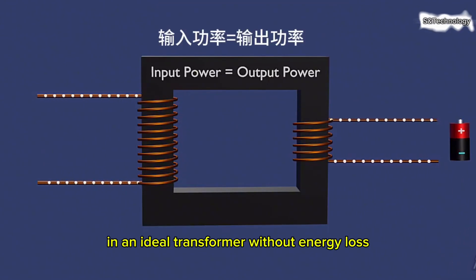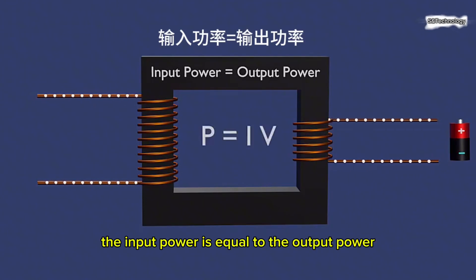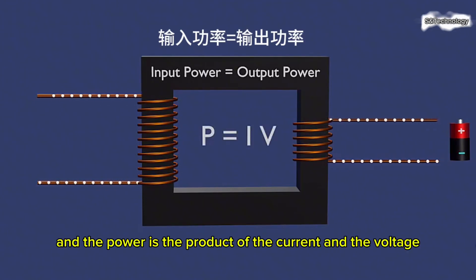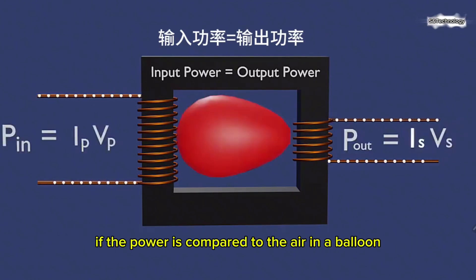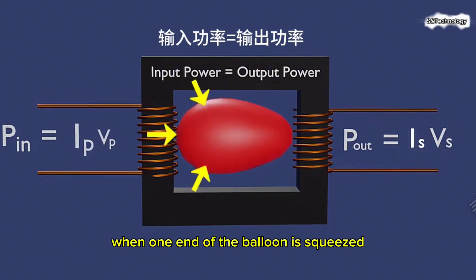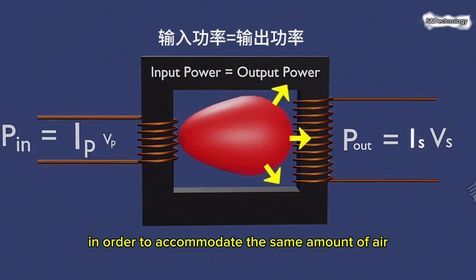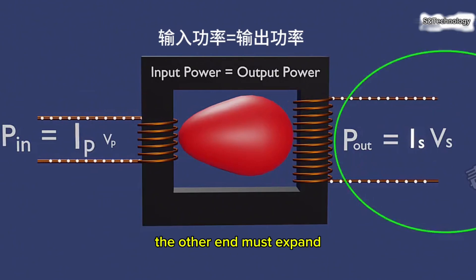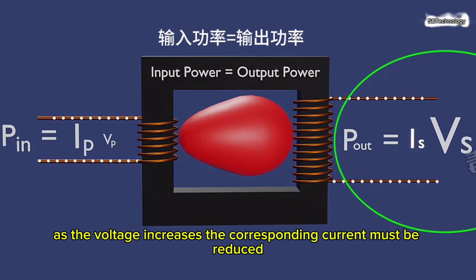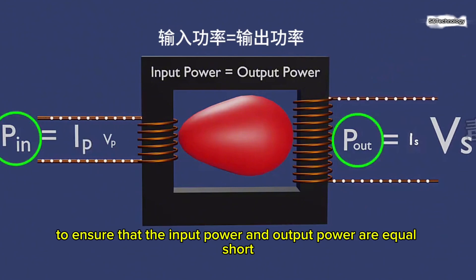In an ideal transformer without energy loss, the input power is equal to the output power, and the power is the product of the current and the voltage. If the power is compared to the air in a balloon, when one end of the balloon is squeezed, in order to accommodate the same amount of air, the other end must expand, which is like the secondary coil. As the voltage increases, the corresponding current must be reduced to ensure that the input power and output power are equal.